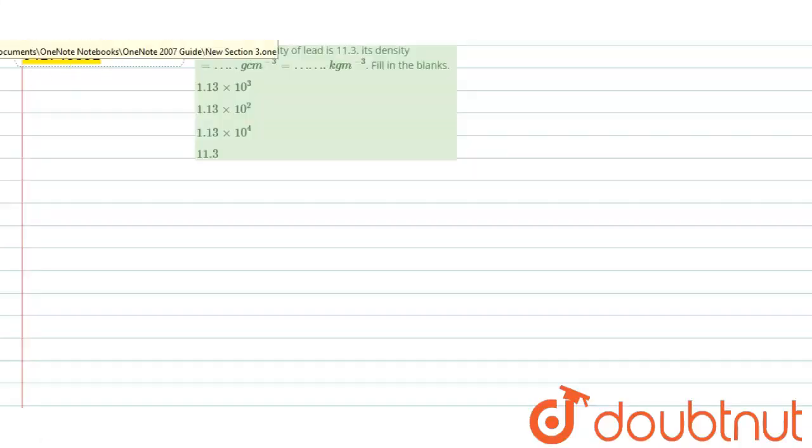Hello students, question is, the relative density of lead is 11.3. Its density is what in gram per centimeter cube and what is its density in kg per meter cube. Let's find out.